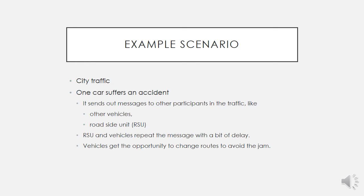On the next slide I will show you an example scenario of how the WANES framework works. This will be a city traffic scenario. One car will suffer an accident and it will stop. After this it will send out messages to the other participants of the traffic, like the other vehicles and the roadside unit. The roadside unit and the vehicles will repeat the message with a bit of delay so participants joining the traffic at a later time can also get knowledge about the accident, and the vehicles will have the opportunity to change their routes to avoid the traffic jam.